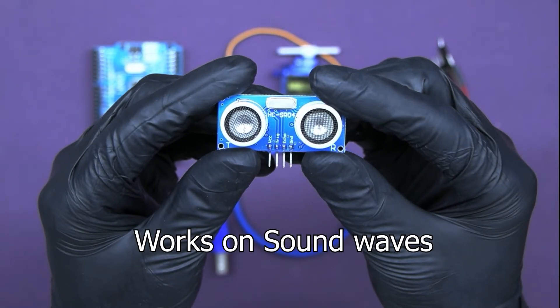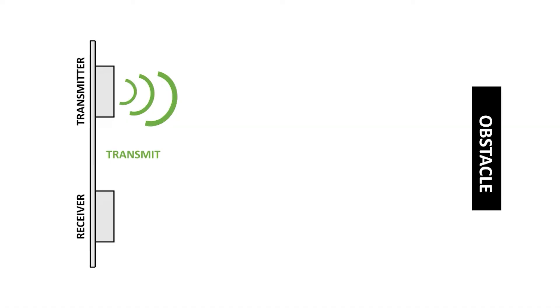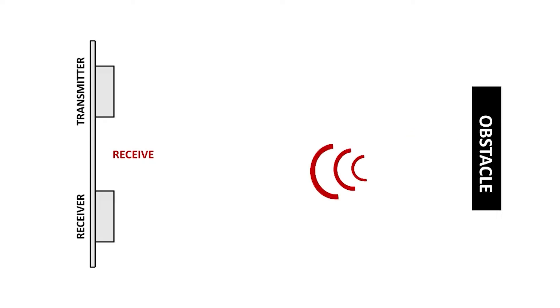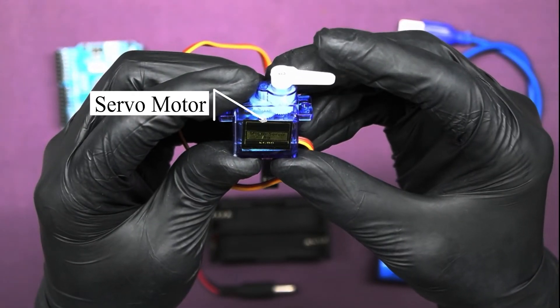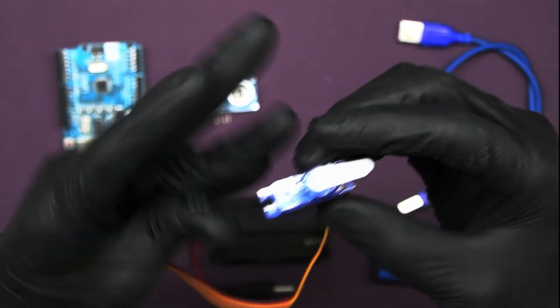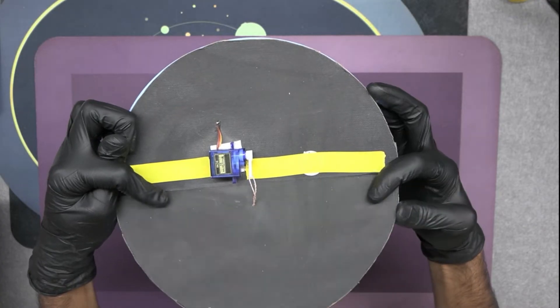This little device uses sound waves to measure distance. It has two main components: the transmitter, which emits ultrasonic pulses, and the receiver, which detects the reflected pulses. Up next, we have the servo motor. This motor is perfect for our project because it allows precise control of angular rotation. We'll be using it to open and close the lid of our dustbin.